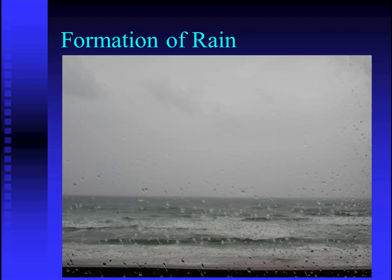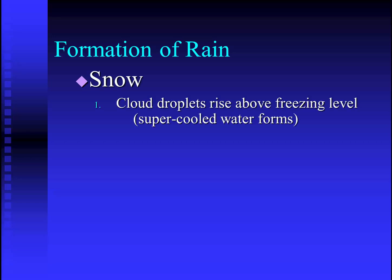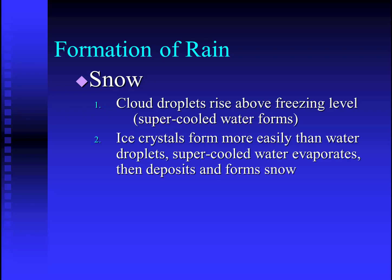So what about rain? Rain seems to be a common form of precipitation around the world — how does it form? Let's go back to snow. This is actually a rather complex process much of the time. Cloud droplets rise above the freezing level because the higher up in the atmosphere, the colder it gets. When they rise above the freezing level, many times supercooled water forms — water that is below zero degrees Celsius but still remains liquid. Since ice crystals form more easily than water droplets, the supercooled water will evaporate, then deposit, and form snow.